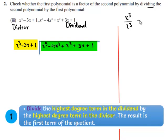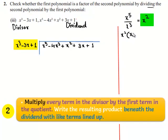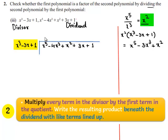On dividing them we get x². When x² is multiplied by the divisor, which is x³ - 3x + 1, it gives x⁵ - 3x³ + x². So x² is written at the place of the quotient and the product x⁵ - 3x³ + x² is written below.